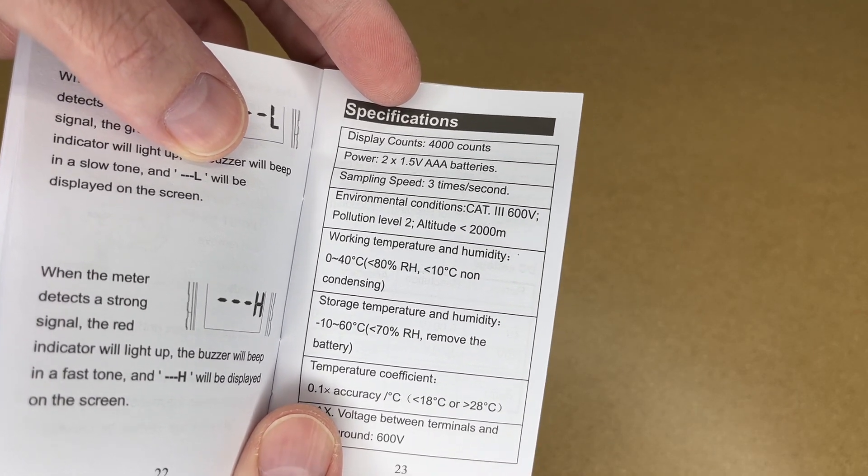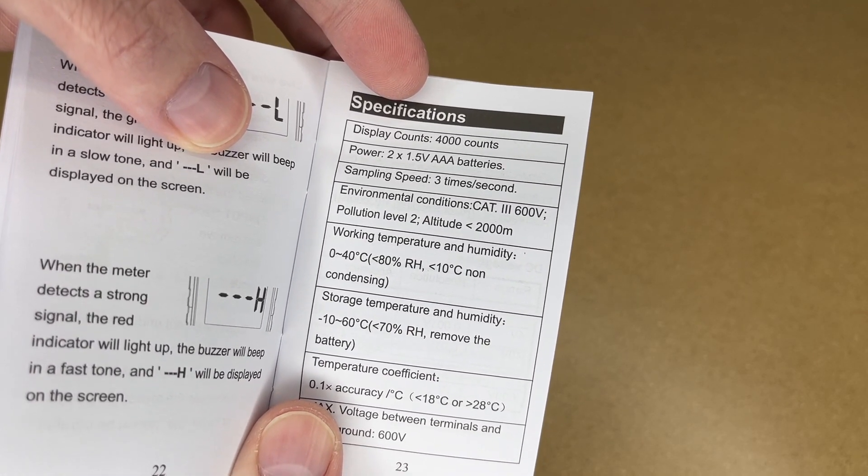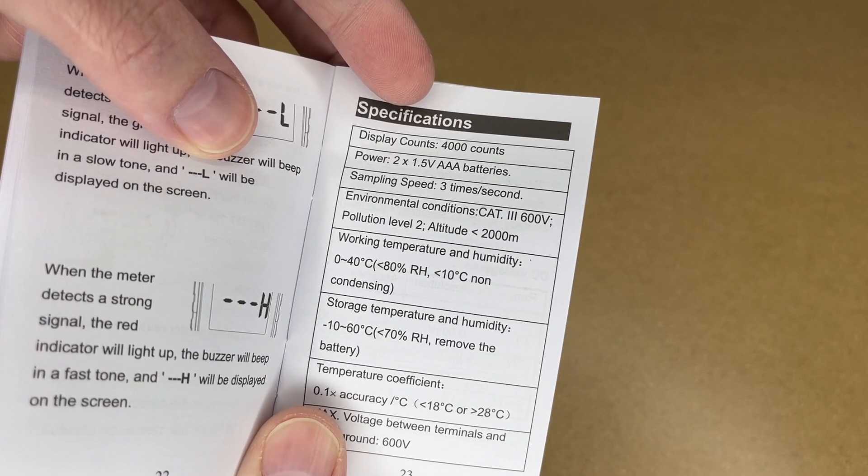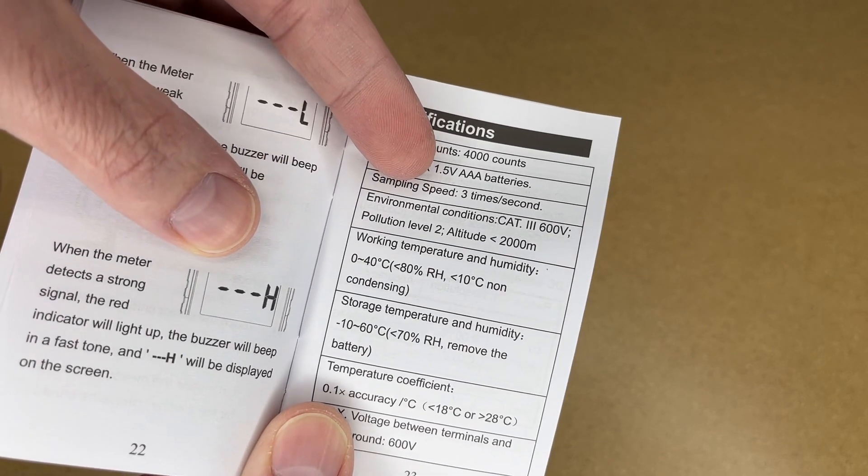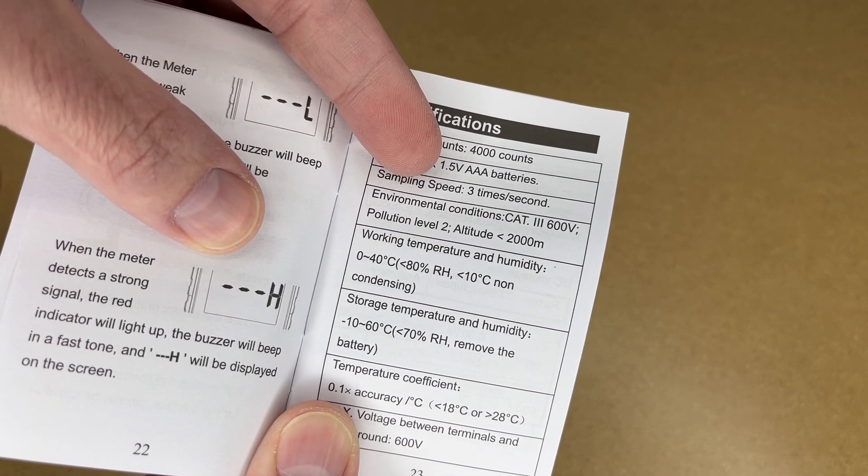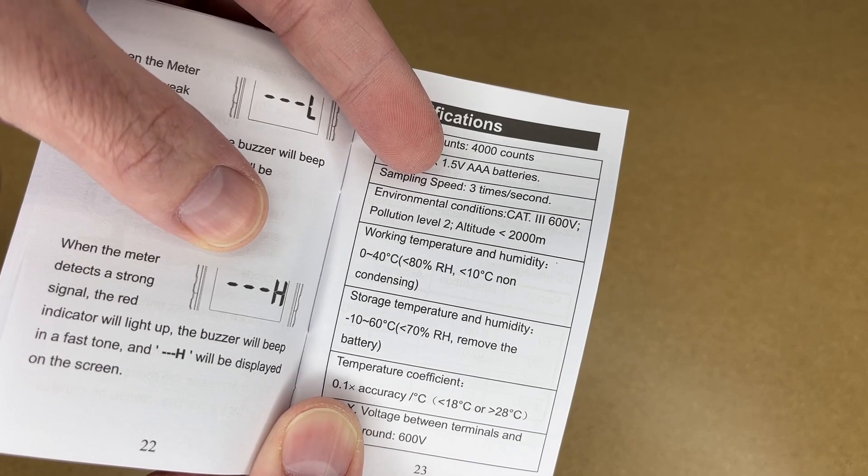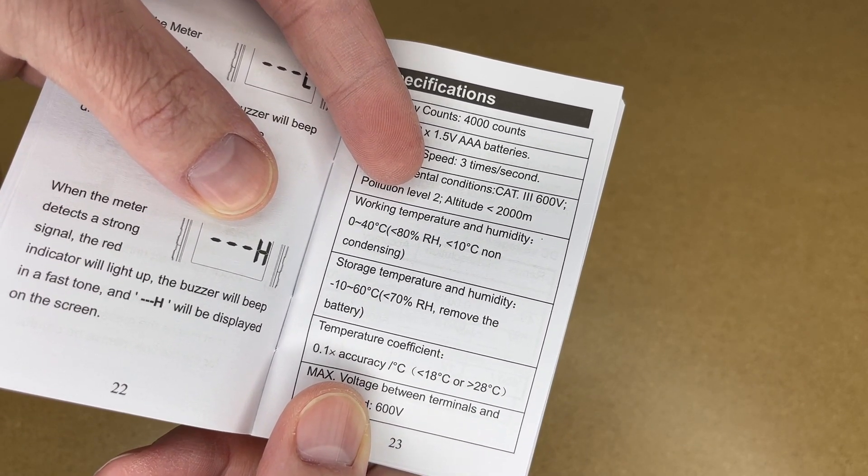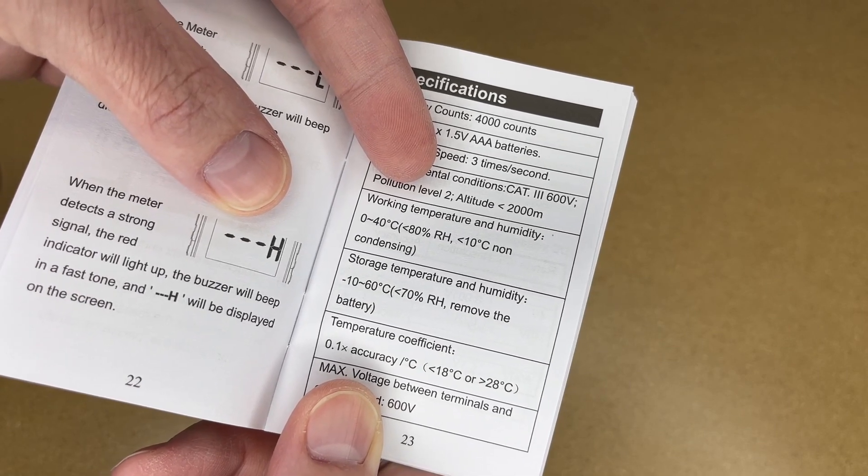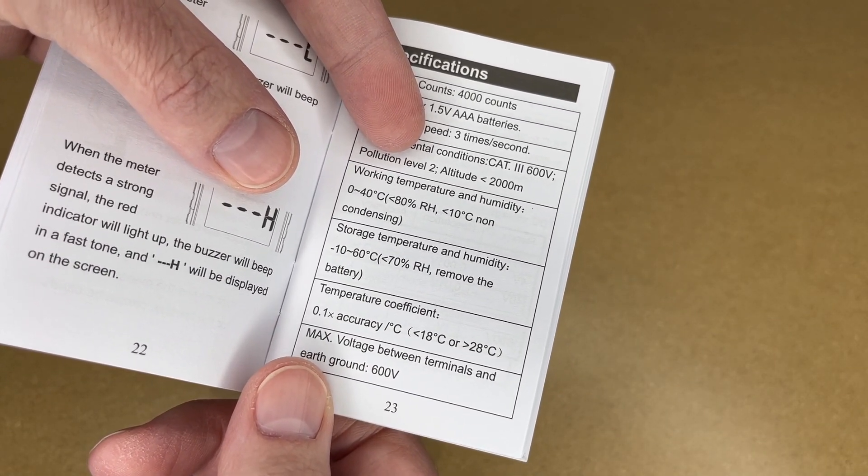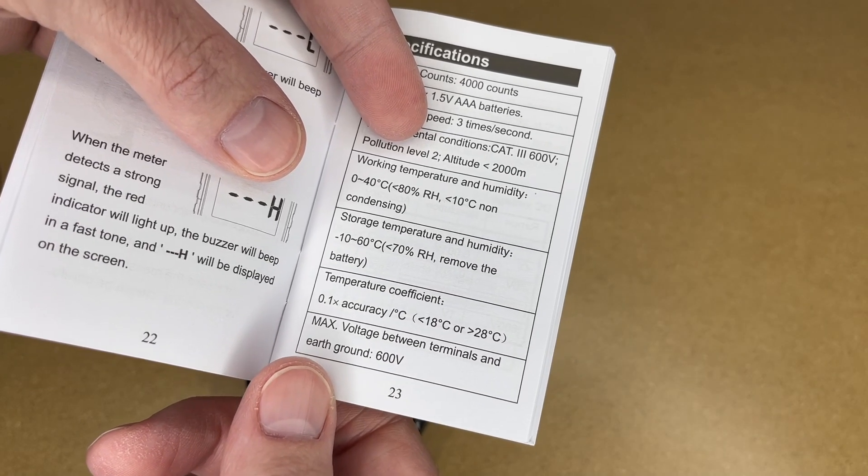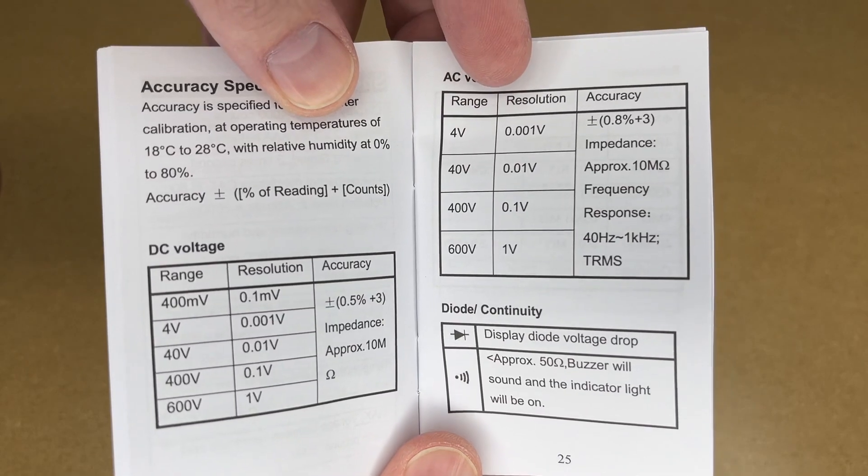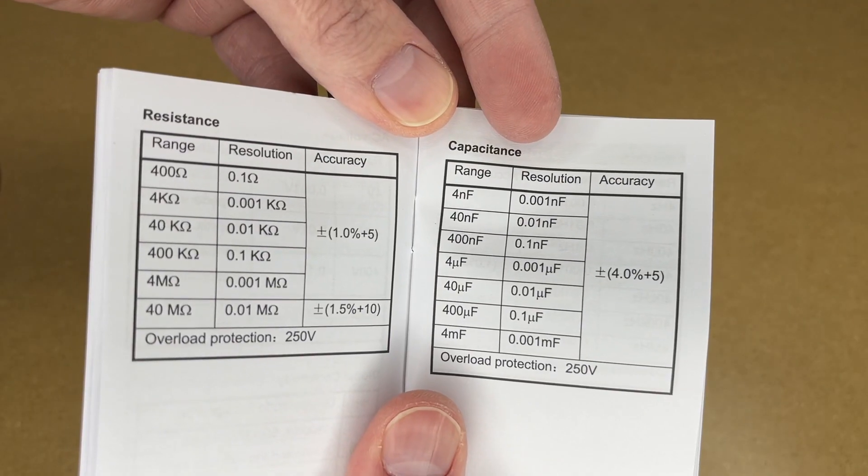Here are the specs: the display counts as 4000, powered by two AAA batteries, sampling speed is three times per second. Environmental conditions: CAT III 600 volts, pollution level 2, altitude less than 2000 meters. Working temperature 0 to 40°C, less than 80% relative humidity, less than 10°C non-condensing. Storage temperature minus 10 to 60°C, less than 70% relative humidity. Temperature coefficient is 0.1x accuracy per degree Celsius. Max voltage between terminals and ground is 600 volts. Here we have the accuracy specifications, resistance and capacitance and frequency, and then maintenance and warranty.